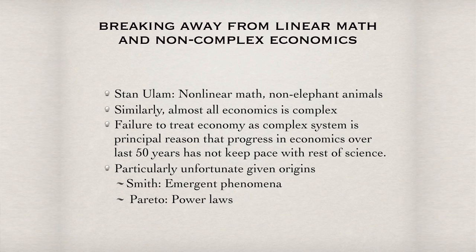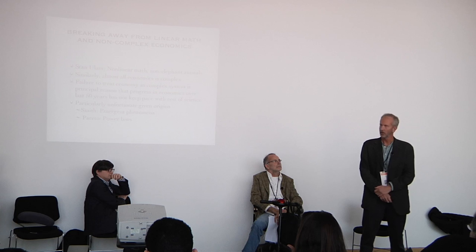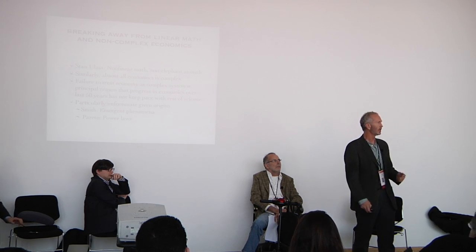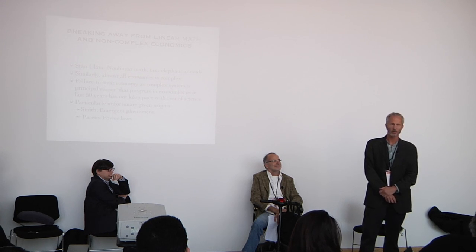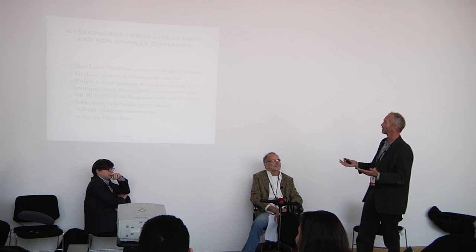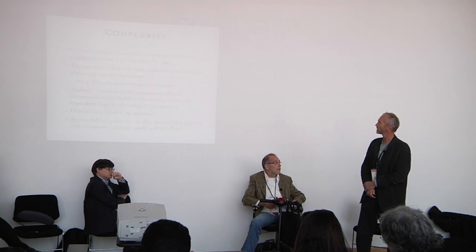I was reminded of a lecture I heard in about 1977 when I was a graduate student in physics by the great mathematician Stan Ulam. The lecture was on nonlinear mathematics, and he began by saying how embarrassed he was to use the term because it's like calling an animal a non-elephant animal — almost all mathematics is nonlinear. Similarly, I think it's strange to refer to non-complex economics. I would assert boldly that the failure to treat the economy as a complex system is the principal reason economics has failed to keep progress with the rest of science over the last 50 years. Adam Smith was the first to clearly articulate what a complex system was, and Pareto was the first to identify a power law — I think those traditions have been lost in economics.